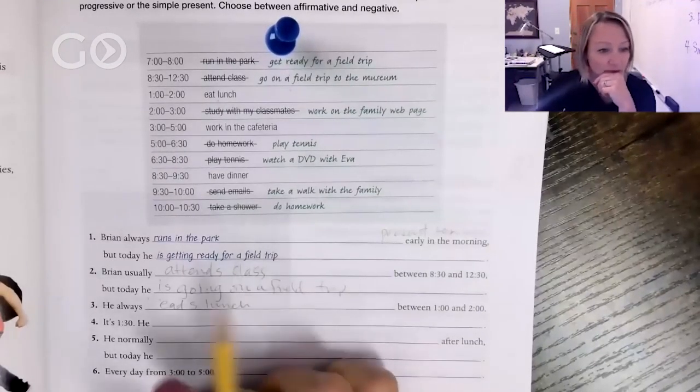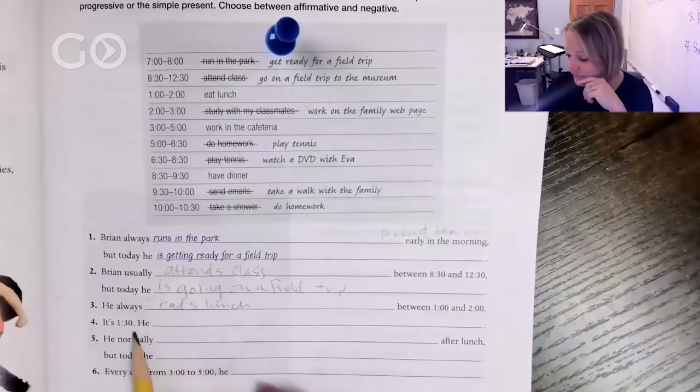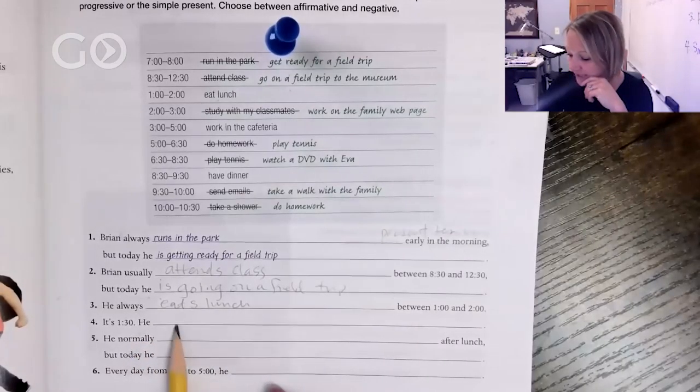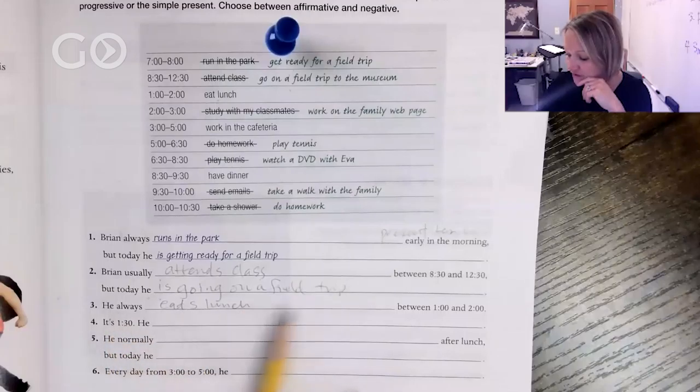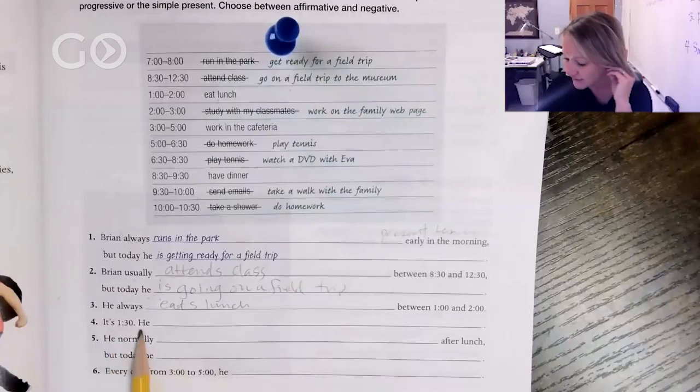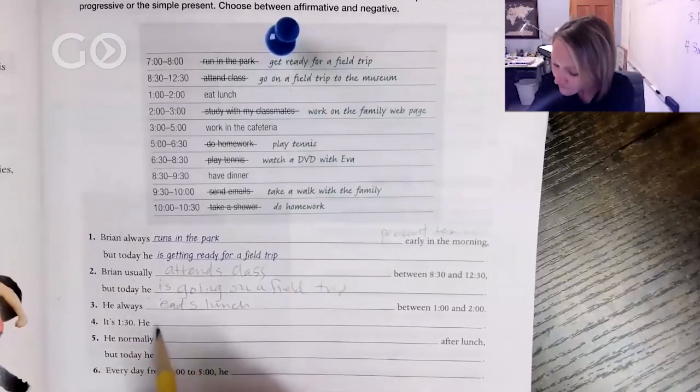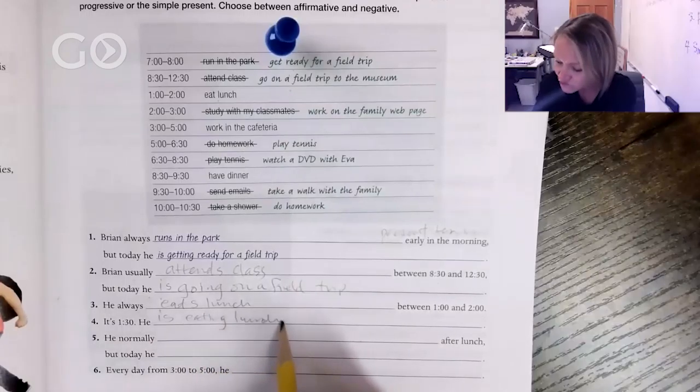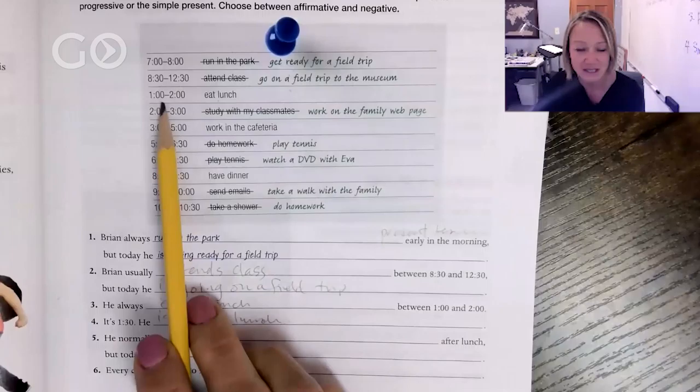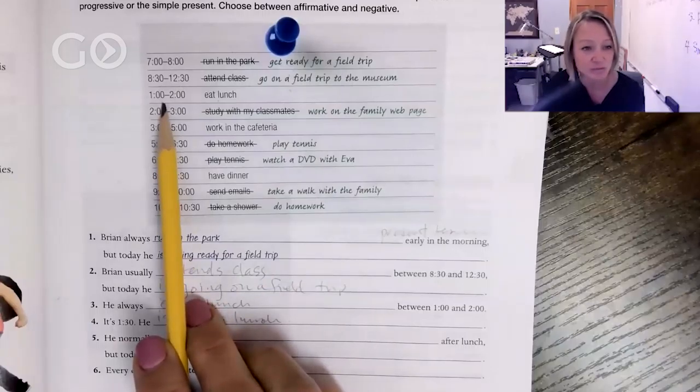So it's 1:30, he blank. He always eats lunch between one and two. It's 1:30, he is eating lunch. We're just making that guess what he's doing because he normally eats lunch between one and two.